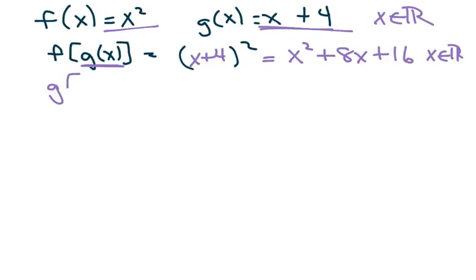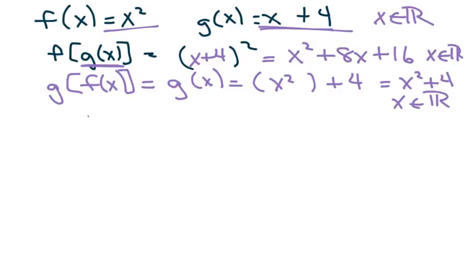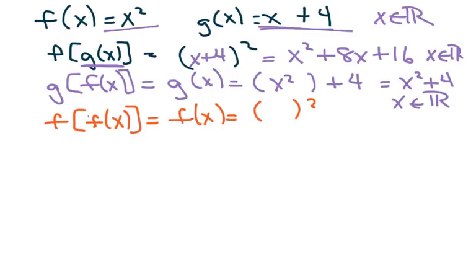For g composed of f of x, I write down g, which is x plus 4, and dump in x squared. That gives x squared plus 4, where x belongs to all reals. For f composed of f of x, f of x is x squared, so I leave the x blank and dump in x squared — that gives x to the 4th. And x belongs to all reals.